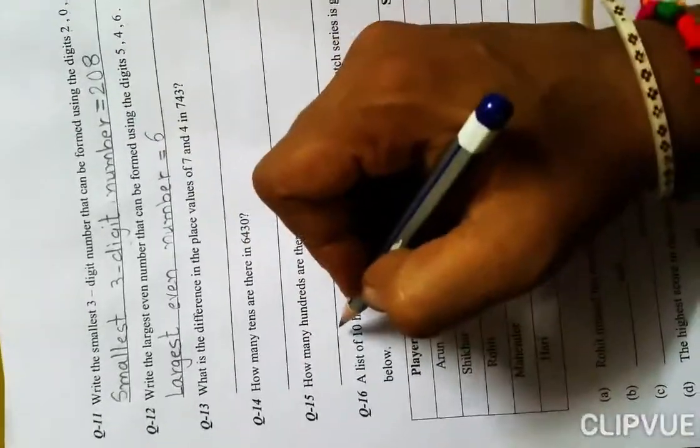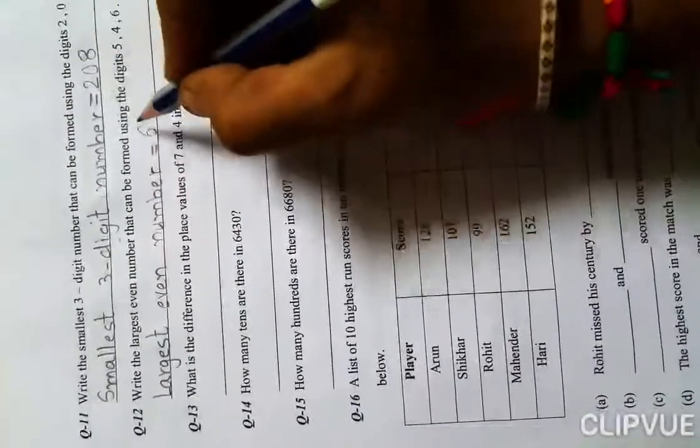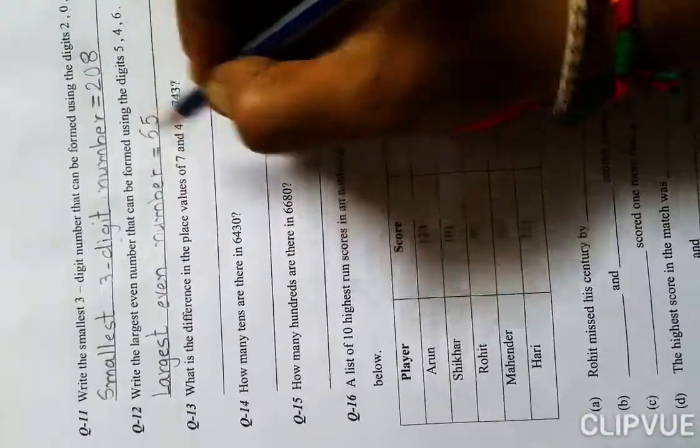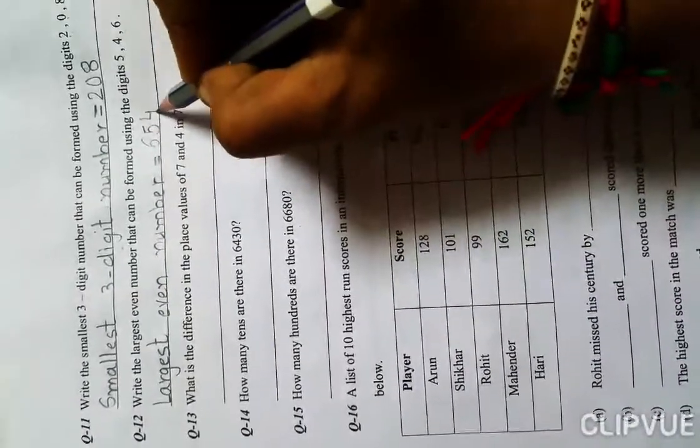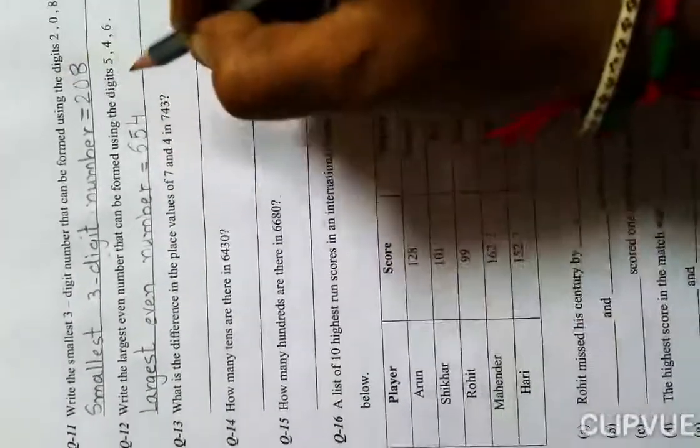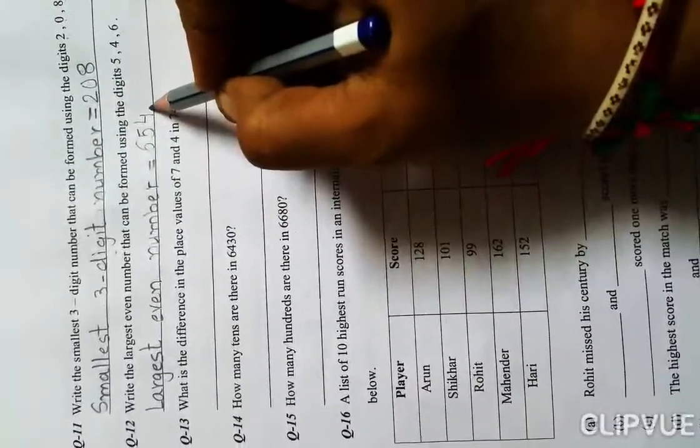Which number is the largest? From 5, 4, and 6, the number 6 is biggest, so we write 6 at hundreds place. Then 5 is the next largest, so we write 5 at tens place, and lastly 4 at ones place. This makes 654, which is directly an even number.